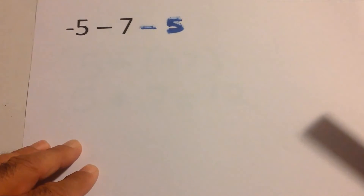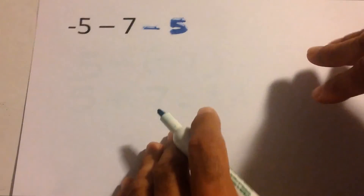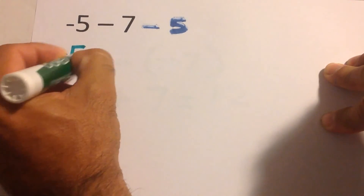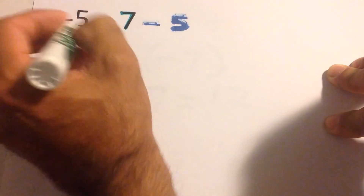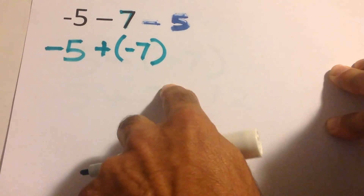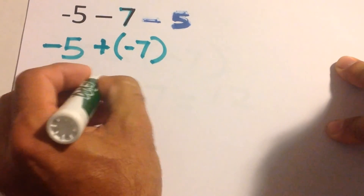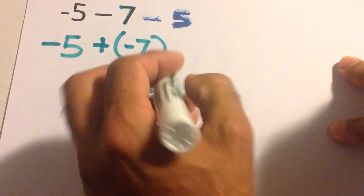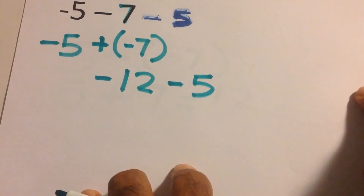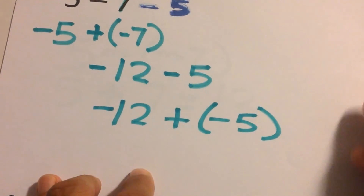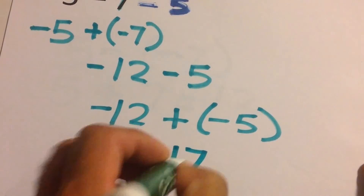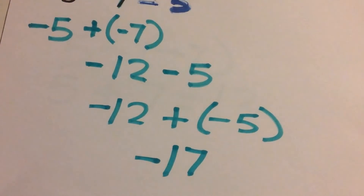Keep Change Change works with three or more numbers too — just do one at a time. For example, negative five minus seven: keep negative five, change minus to plus, change positive seven to negative seven, giving negative five plus negative seven — you owe five, you owe seven, so you owe twelve. Continue applying Keep Change Change to remaining terms. The final answer is negative seventeen. Remember: Keep Change Change only applies when you have subtraction.